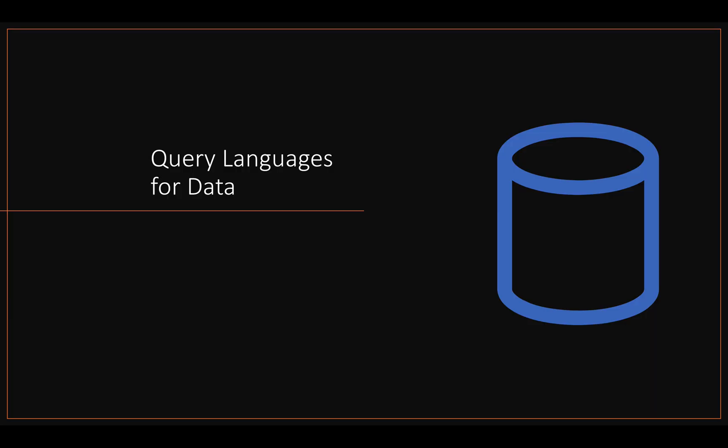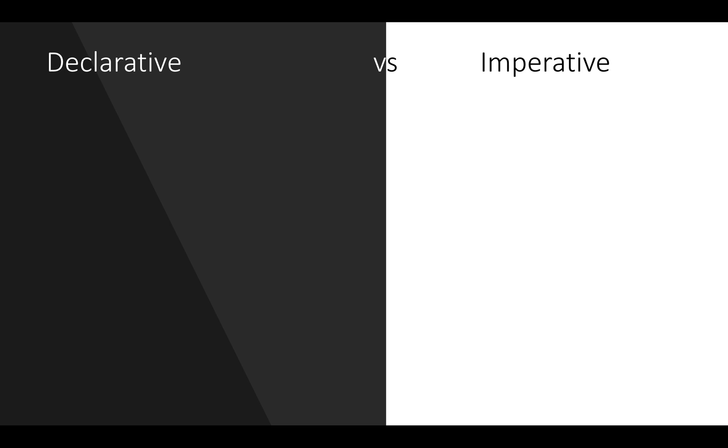Now let's see what are the different query languages used for data. We'll cover declarative and imperative languages. Declarative languages specify the pattern of the data, what conditions we want and how we want the data in sorted format, in aggregated format. Specifically, we specify the transformations, but we do not specify how we want to achieve that goal.